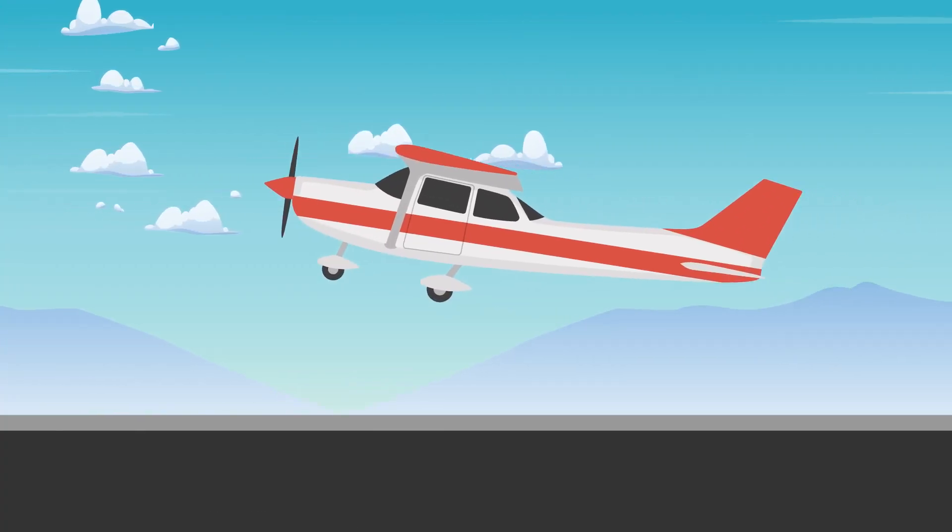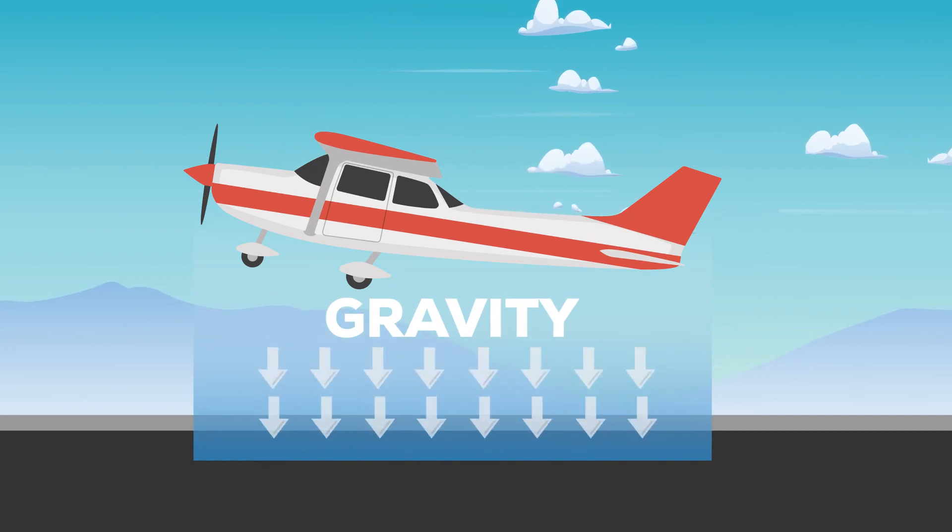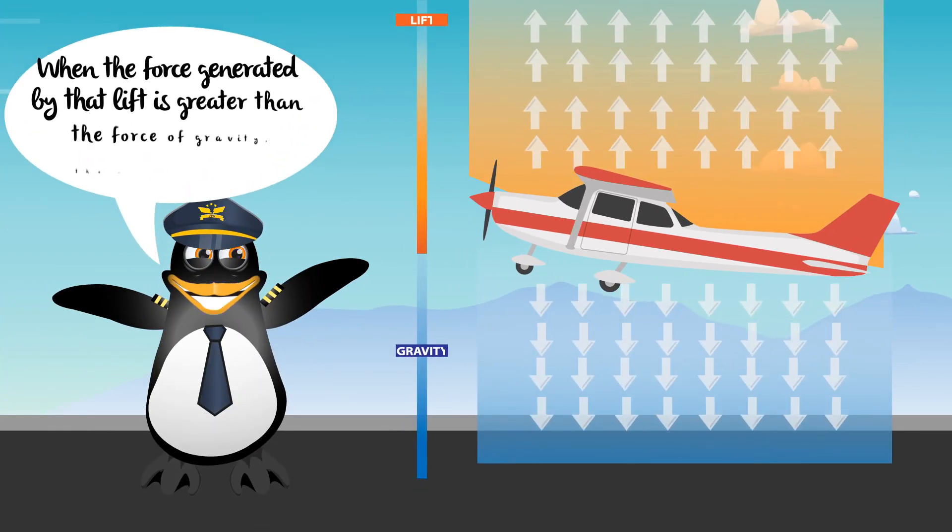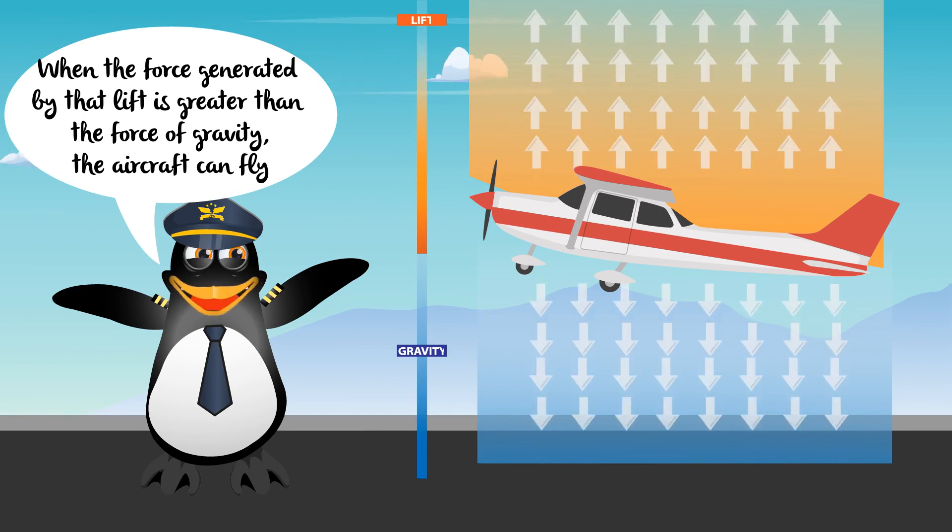For an aircraft to take us to the skies, it must overcome the force of gravity. To do that, it must generate a force called lift, which is produced by an airplane's wings. When the force generated by that lift is greater than the force of gravity, the aircraft can fly.